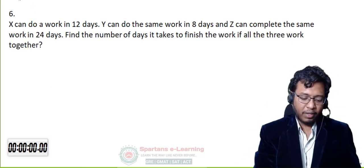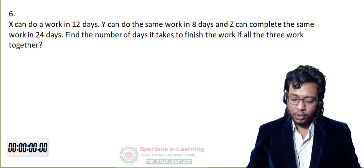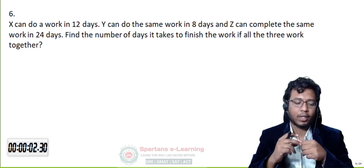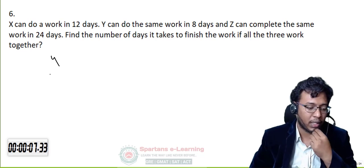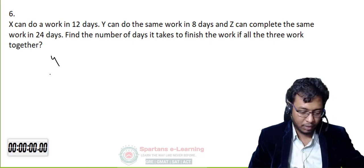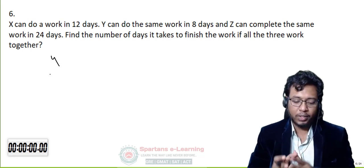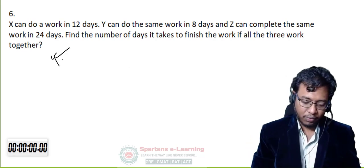LCM method is not a difficult method — it is an important method. New question: X can do a work in 12 days, Y can do the same work in 8 days, Z can complete the same work in 24 days. Solving orally: 8 × 3 = 24, so Y+Z = 24/4 = 6 days. Then X = 12, Y+Z = 6: 6 × 2 = 12, so combined X+Y+Z = 12/3 = 4 days. Answer is 4 days.